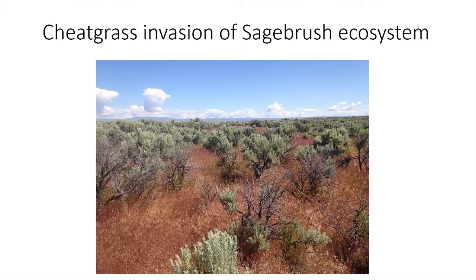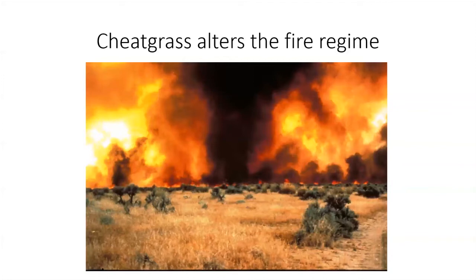Cheatgrass invades many native habitats. One of the biggest is the sagebrush ecosystem — shown here in green are mature sagebrush plants, and below that is a monoculture of cheatgrass that has senesced, is very dry, and very susceptible to fire. That dry cheatgrass can easily burn, and the fires start in the sagebrush ecosystem. Sagebrush is not adapted to this change in fire regime — it does not survive these fires. As a result, the sagebrush dies off, and in the next season the cheatgrass re-establishes itself, eventually forming monocultures without any sagebrush.